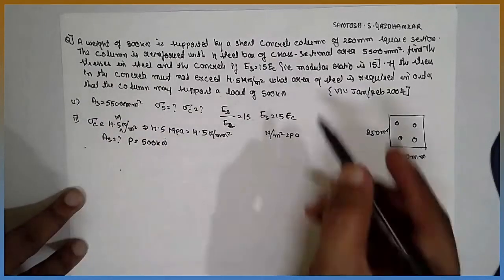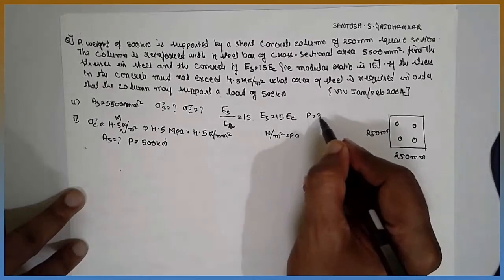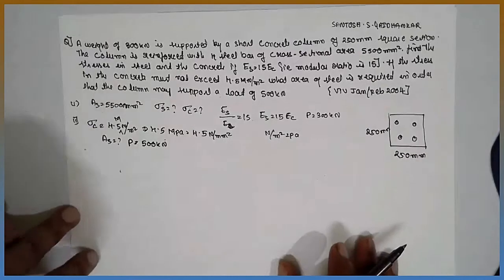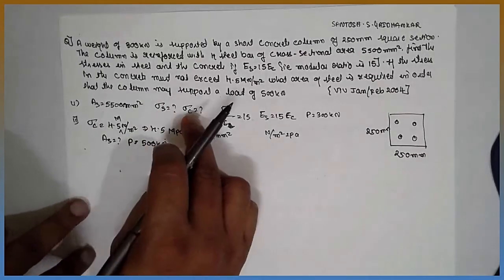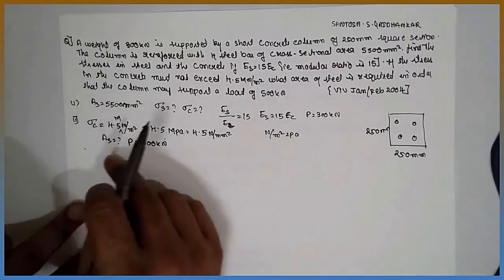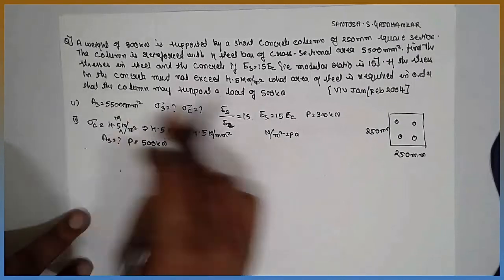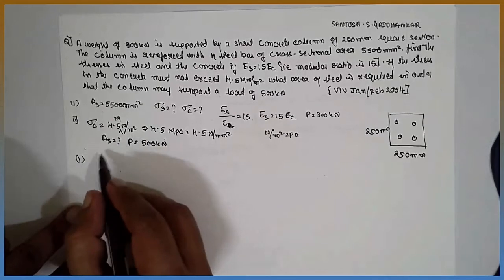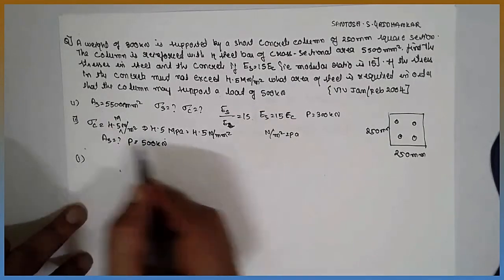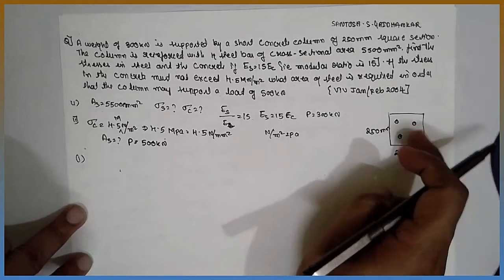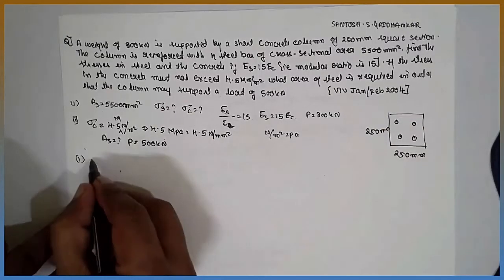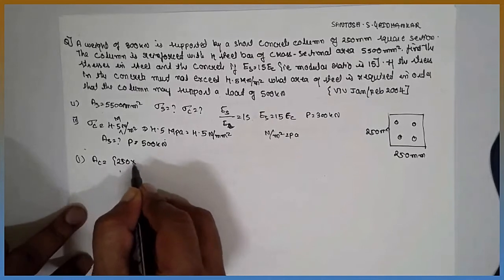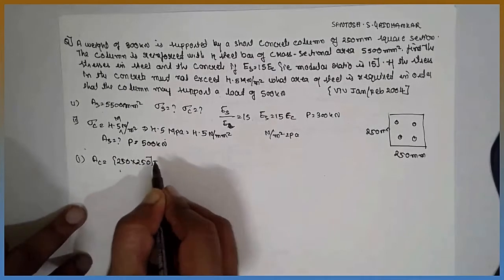In the first part, we are going to find out the stresses in the steel and the column. First, we calculate the area of concrete. The area of steel is given, so: Area of concrete = 250 × 250 − AS.